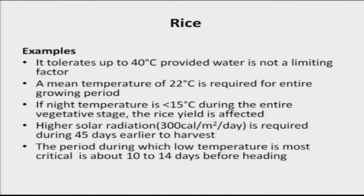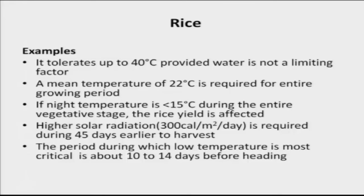Rice also requires a mean temperature of 22 degrees centigrade for the entire growing period — that is, maximum temperature plus minimum temperature divided by 2 must be around 22 degrees centigrade. This is the cardinal temperature for the growing period of rice; if the temperature is more, there is yield loss as we have studied in previous classes. If the night temperature is less than 15 degrees centigrade during the entire vegetative stage, the rice yield is greatly affected. The minimum temperature required for rice is 10 degrees centigrade, so 15 degrees is already a dangerous threshold limit for losing crop yield.